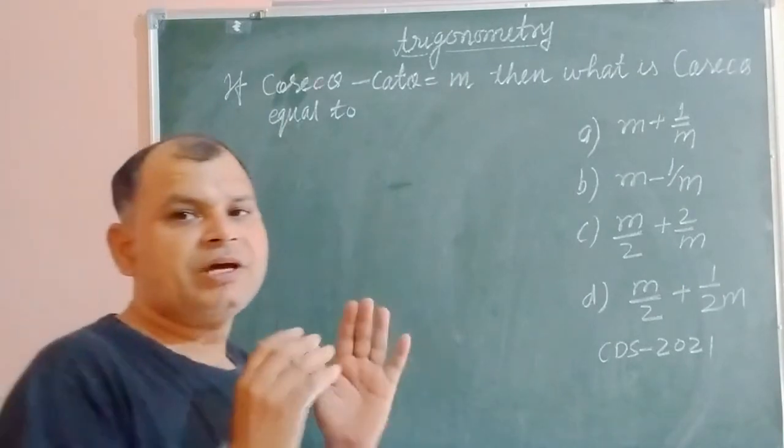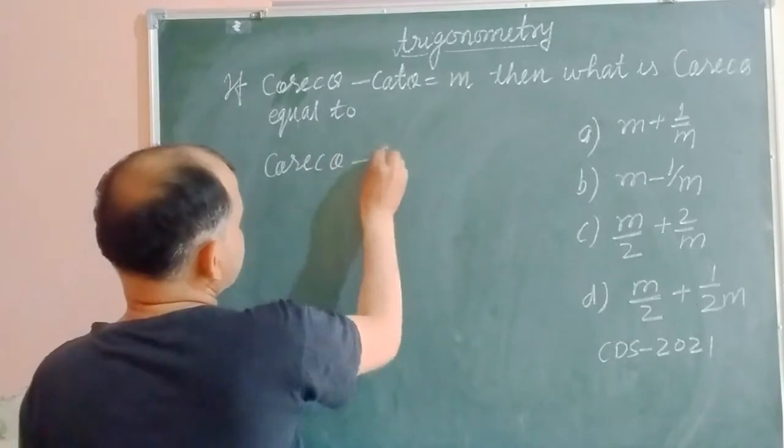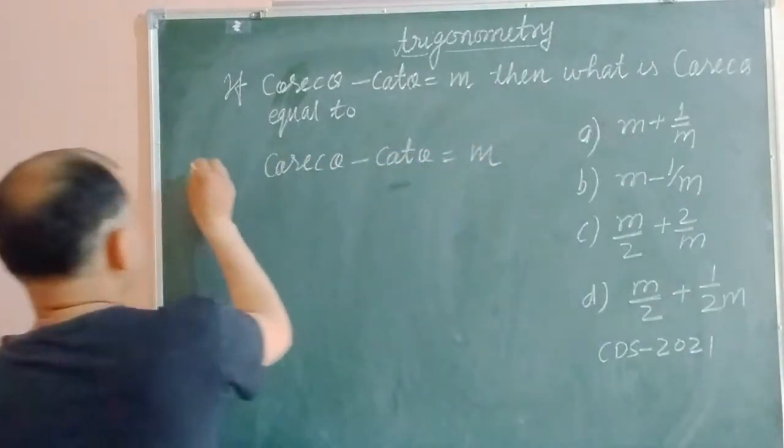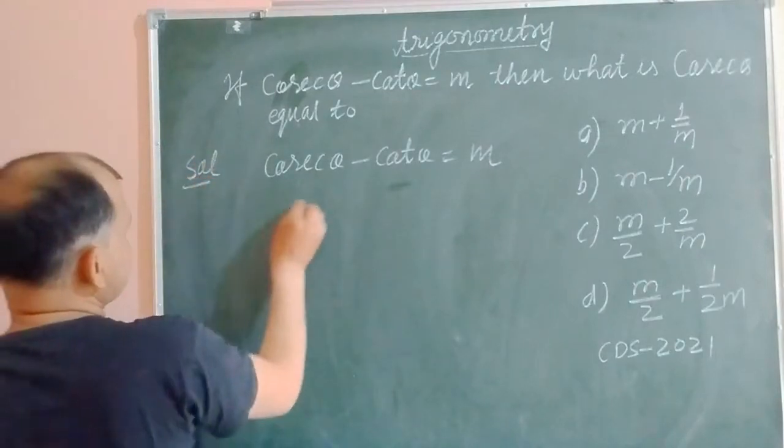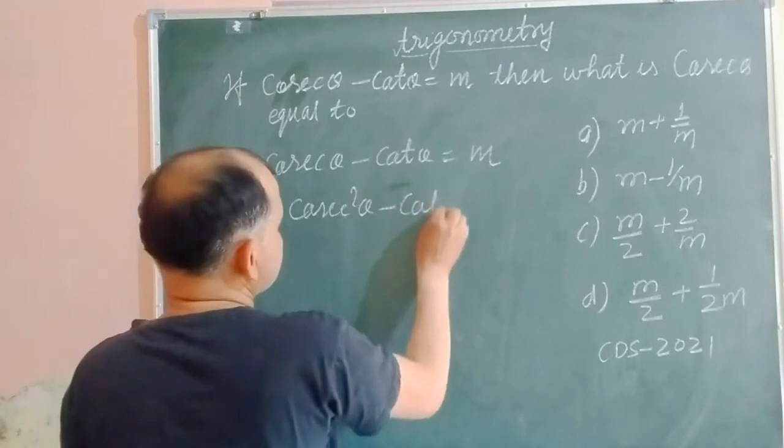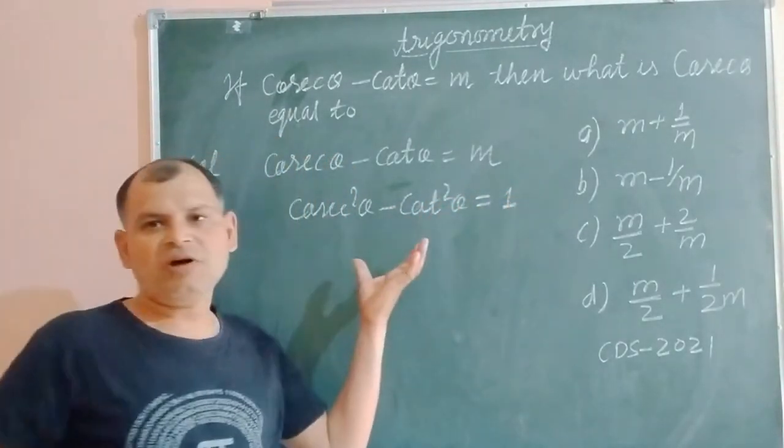Here we have that cosec theta minus cot theta equal to m, and we know that cosec square theta minus cot square theta equal to 1. This is a formula of trigonometry.